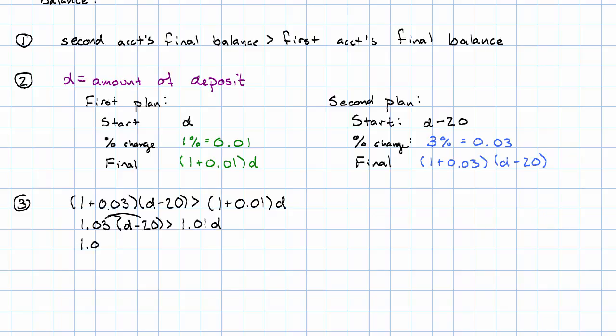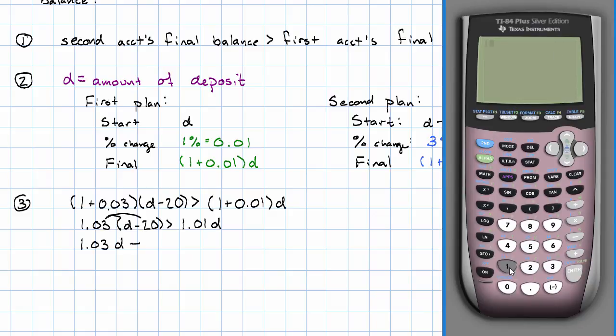1.03 times D minus, let's use a calculator for this multiplication. 1.03 times 20 is 20.6.